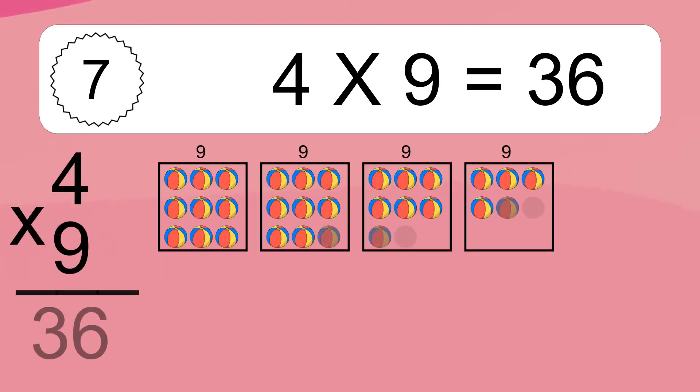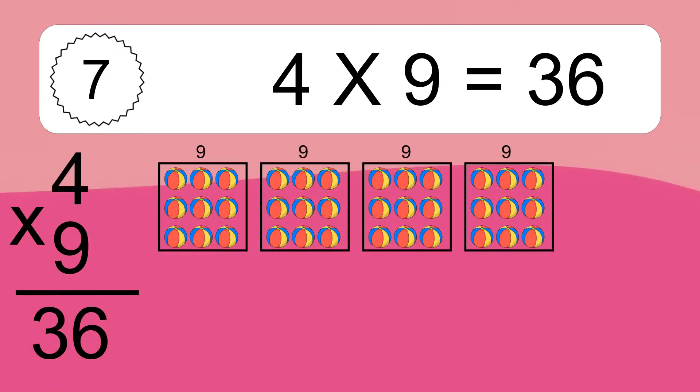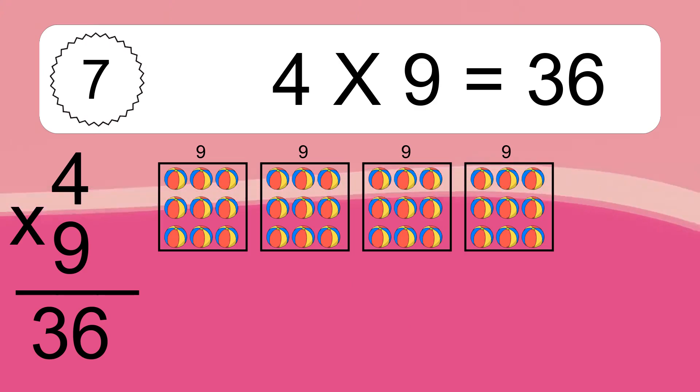4 times 9 equals what? 4 times 9 equals 36. We have 4 boxes and each box has 9 colorful balls inside.